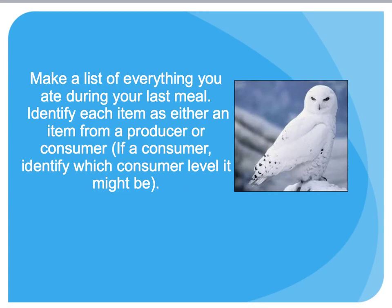To finish up, make a list of everything you ate during your last meal and identify each item as coming from either a producer or a consumer. If it's a consumer, try to identify which level consumer it might be. That's a basic introduction to feeding relationships, ecosystem organization, and how we classify organisms as producers, autotrophs, heterotrophs, and different levels of consumers.